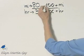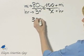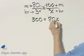I'll use cross products since I have a proportion set up. 100 times 3, that's 300. And then 80 times X, that's 80X.